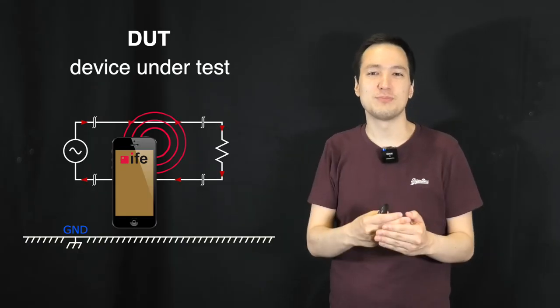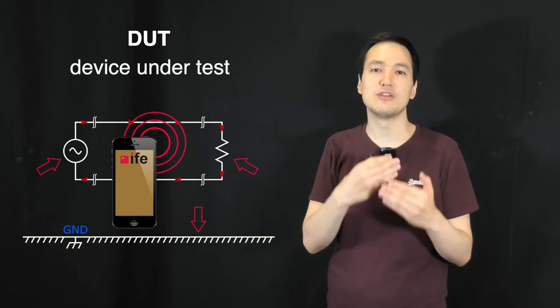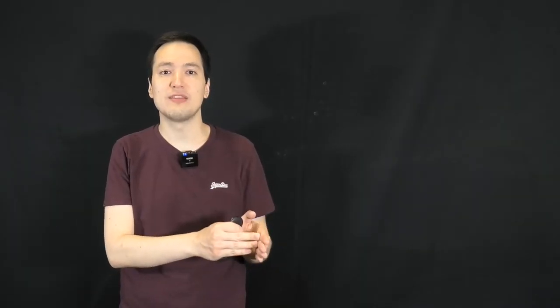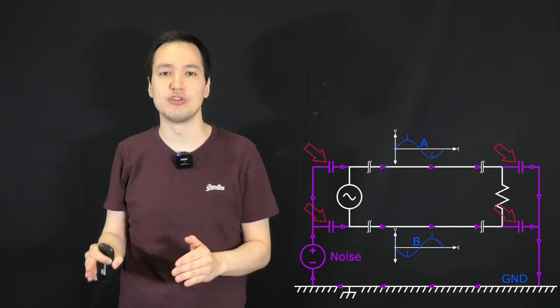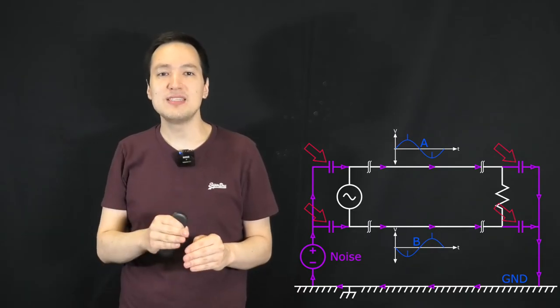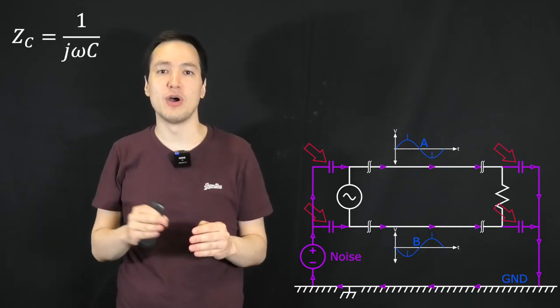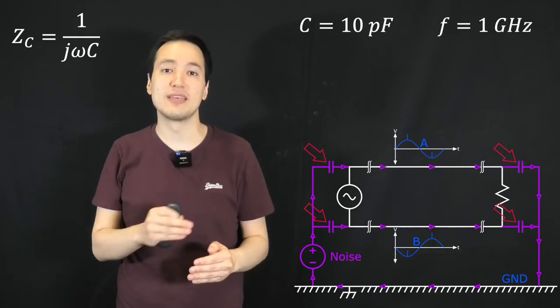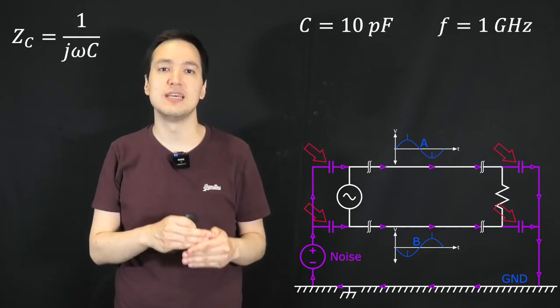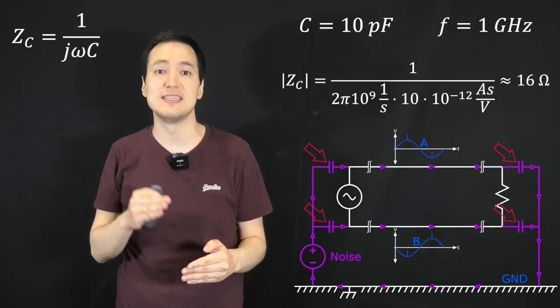This works because our source and load are located near the chassis. So, common mode problems result from parasitic elements in the circuitry. Even if these parasitic capacitances were only 10 pF in value, a 1 GHz noise signal would see an impedance of only 16 ohms.